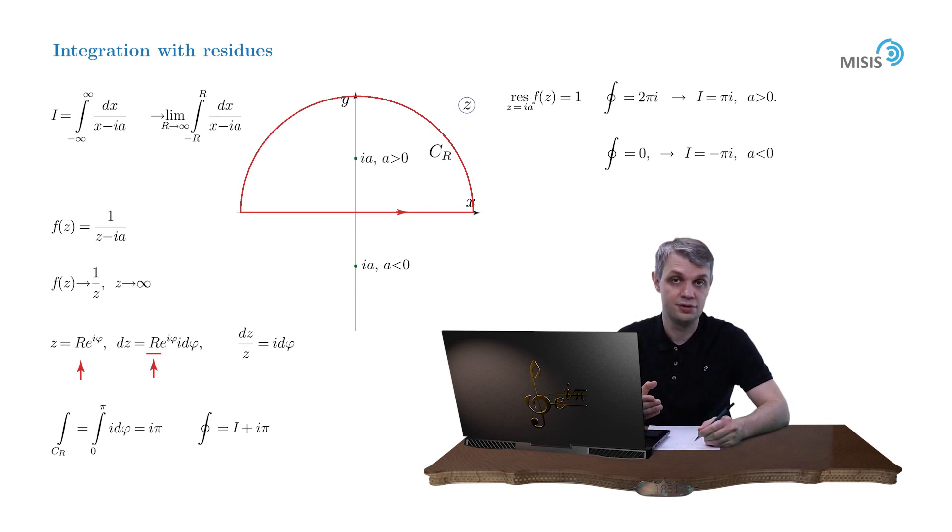Therefore, our answer for this integral can be expressed via the so-called sign function. And we obtain pi i times sign of a. So what we've got here is a nice integral representation of a sign function. And it's very useful in applications because a sign function is aggressively non-analytic. So when you encounter it, you can't use complex analysis. But once you substitute it with an integral containing only regular functions, you can unleash the whole power of complex analysis in your work.